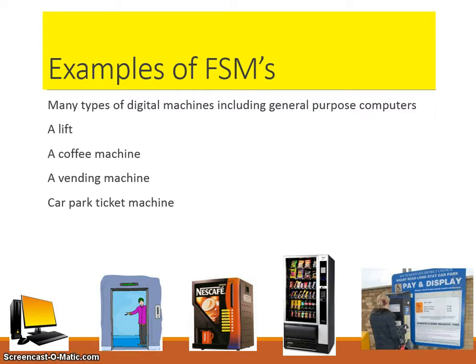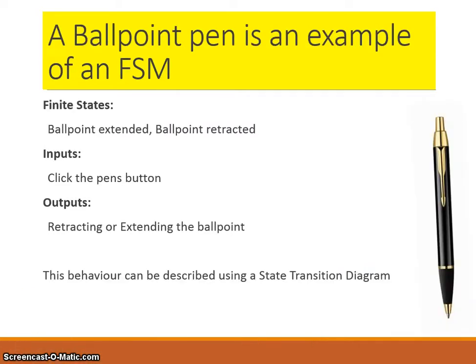A very basic example may be something like a ballpoint pen. This could be an example of a finite state machine. The states are: the ballpoint is extended, or the ballpoint is retracted. The input is clicking the pen's button. The output is that it retracts or extends the ballpoint.